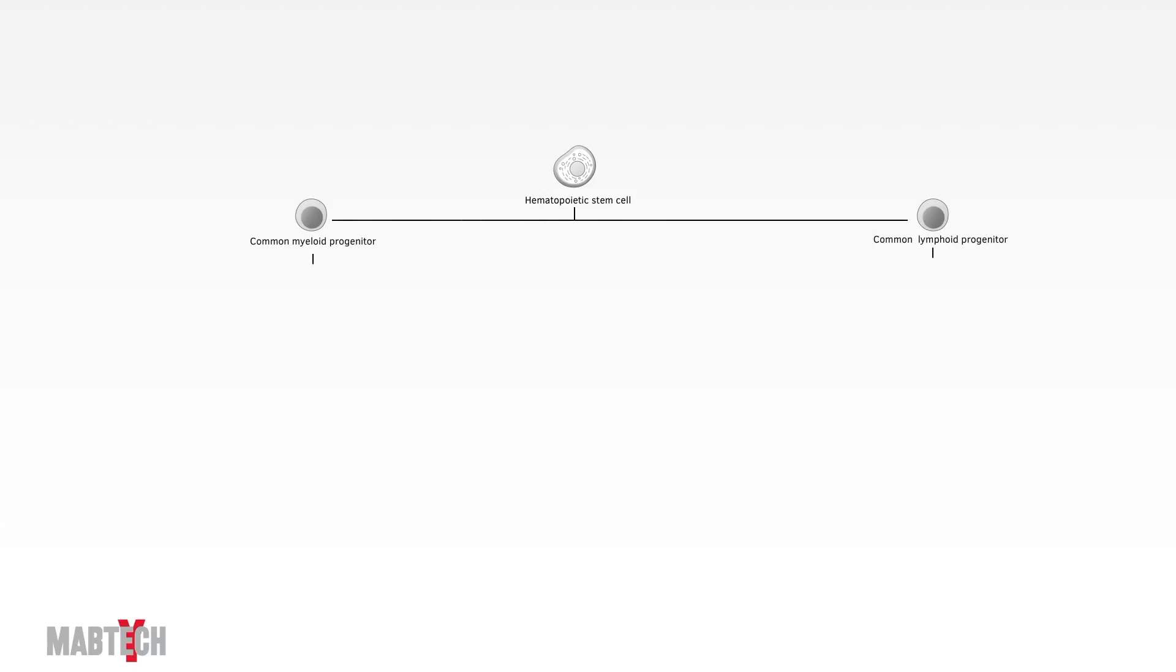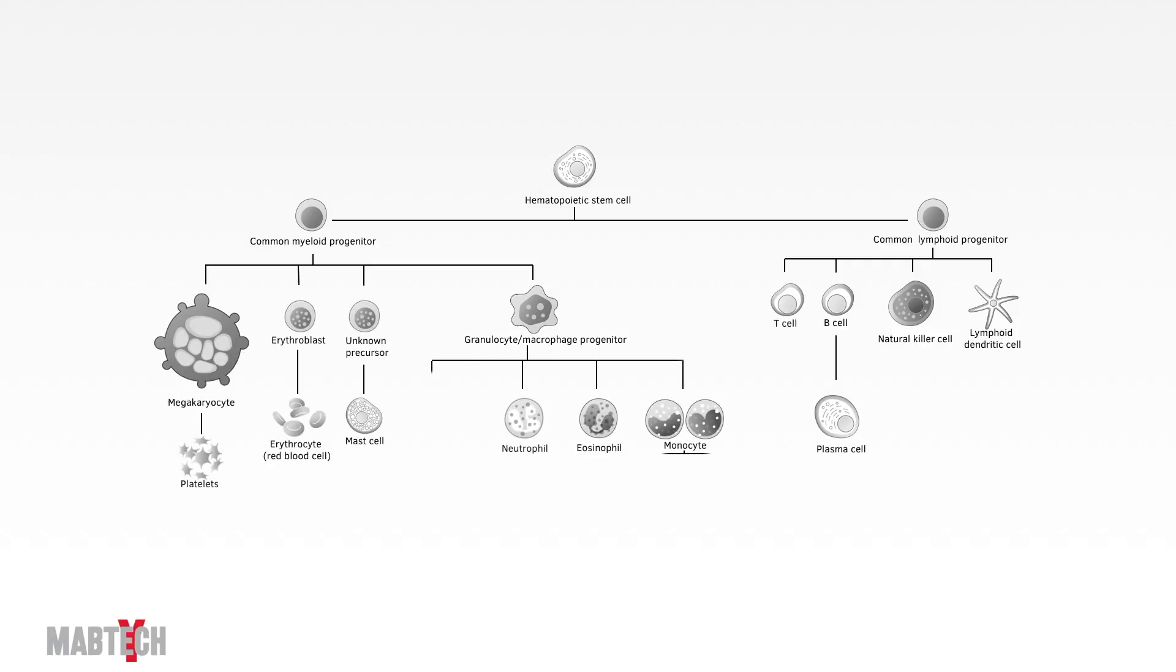All blood cells arise in the bone marrow from common blood-forming stem cells called the hematopoietic stem cells. Following the right arm in this image, all lymphocytes have a common lymphoid progenitor cell, and under it we find the T and B-cells.